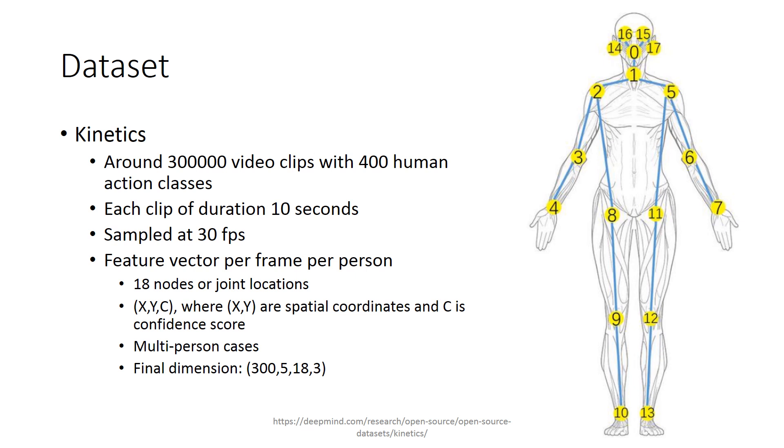After skeleton info extraction, the feature vector obtained is of dimension 3 for every node. Since we are considering 18 nodes for each person and for each frame, it will have an 18 by 3 dimension feature vector.